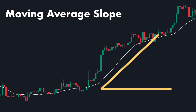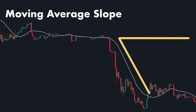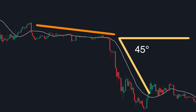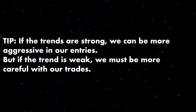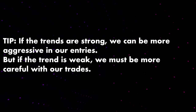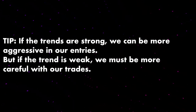The slope of the moving average also gives us a good hint about the strength of the trend. In an uptrend, the moving average is sloped upwards. In a strong uptrend, the slope will be steep and close to a 45-degree angle, while in a weak uptrend, we see a gentle upward slope. The same applies to downtrends: in a strong downtrend, we see a steep downward slope with approximately a 45-degree angle, while in a weak downtrend, we have a gentle downward slope. If the trends are strong, we can be more aggressive in our entries, but if the trend is weak, we must be more careful.